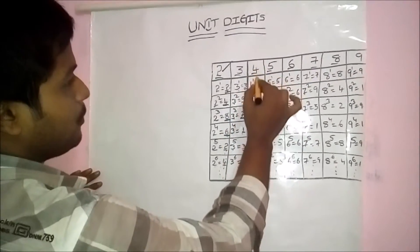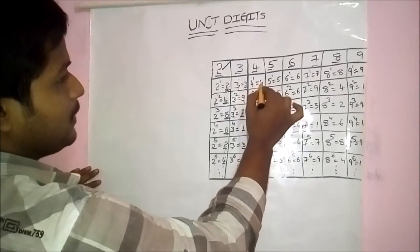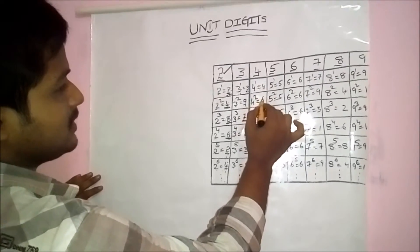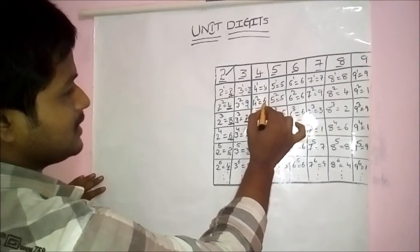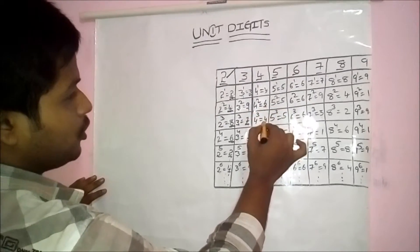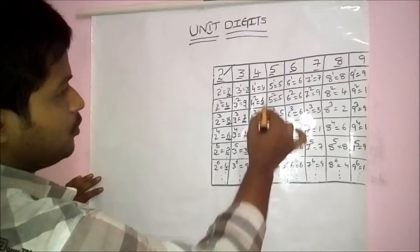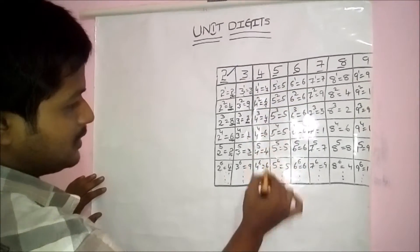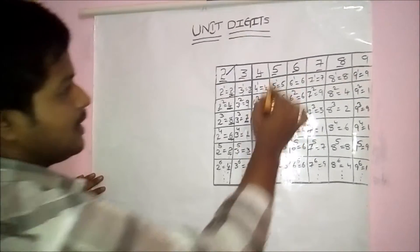4 power 1 is 4, 4 squared is 16 — unit digit is 6, 4 cubed unit digit is 4. It repeats like 4, 6, 4, 6 and so on.